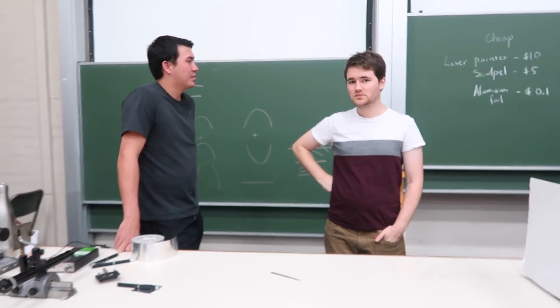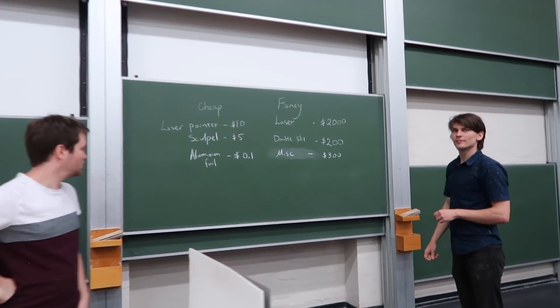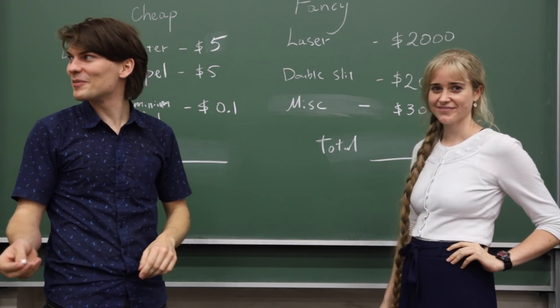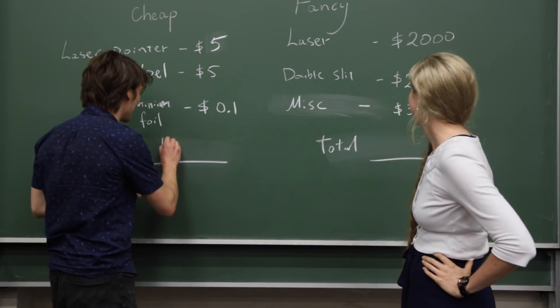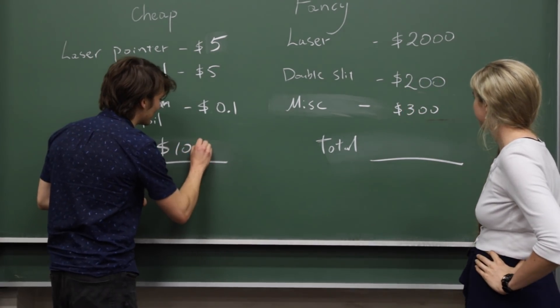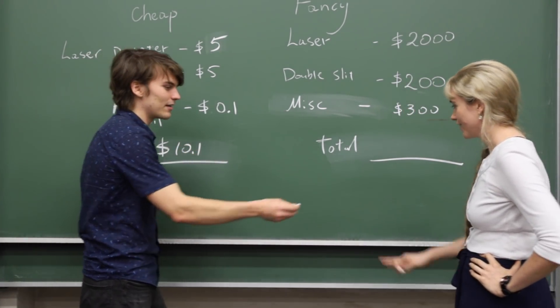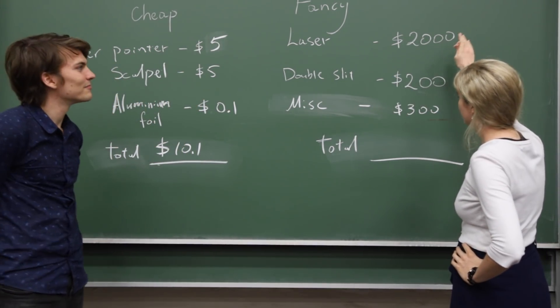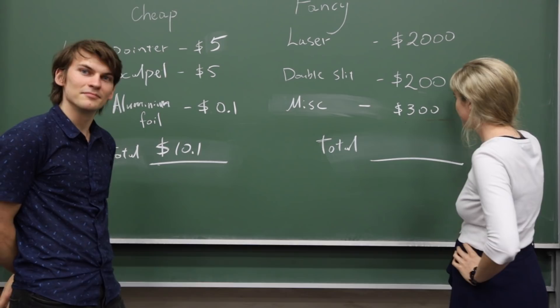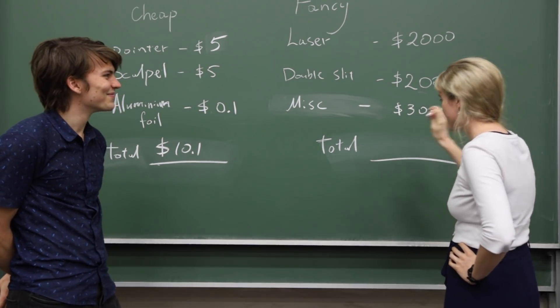So the total for the cheap experiment works out to be five plus five plus ten cents, so it works out to be ten dollars and ten cents. Okay, I've got the chalk. The total for the fancy one is 2000 plus 200 plus 300, that's 2500.